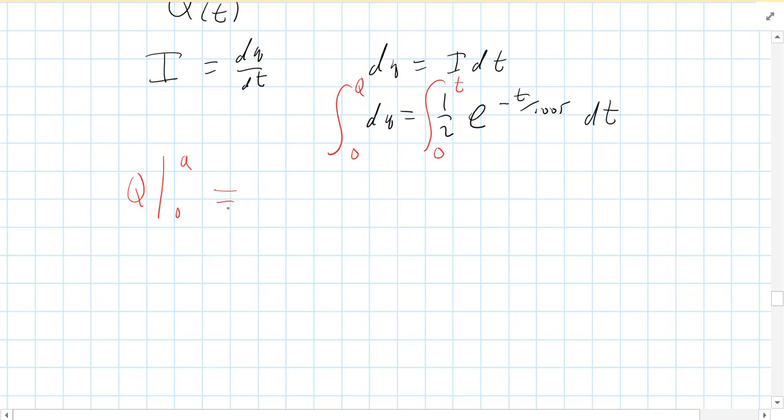So on the left side, the integral of DQ is Q. We're evaluating that from zero to Q, which is simply Q. The right side is the fun part. So we have to integrate this. So we have a half, and then E to the negative T over 0.005, divided by this thing in the exponent, negative 1 over 0.005. And we have to be very careful and evaluate that from zero to T.